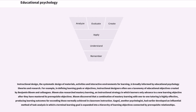Instructional design — the systematic design of materials, activities, and interactive environments for learning — is broadly informed by educational psychological theories and research. Instructional designers often use Bloom's taxonomy of educational objectives when defining learning goals. Bloom also researched mastery learning, an instructional strategy in which learners only advance to a new objective after mastering prerequisite objectives. Bloom discovered that combining mastery learning with one-to-one tutoring is highly effective, producing learning outcomes far exceeding those normally achieved in classroom instruction. Gagné, another psychologist, developed an influential method of task analysis in which a terminal learning goal is expanded into a hierarchy of learning objectives connected by prerequisite relationships.